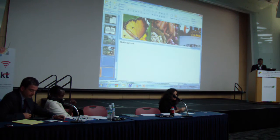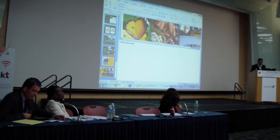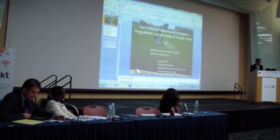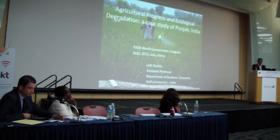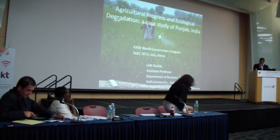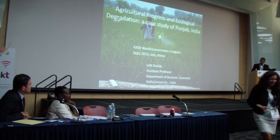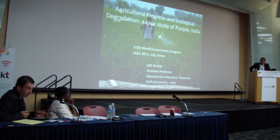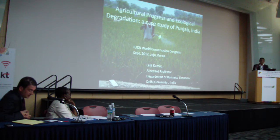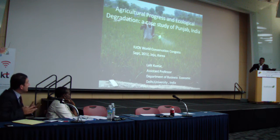Lalit Kumar teaches in the Department of Business Economics at Bhim Rao Ambedkar College. His areas of interest include mathematics for economics, industrial economics, statistics, environmental economics, and economic policy and development. He researches environmental economics, including valuation and accounting for environmental loss, biodiversity, and effects of climate change. Lalit, I'd like to ask you two questions: Can we say that India has secured food for its population in Punjab? And what are the policy options that secure vital ecosystem services and food supply in a balanced way?